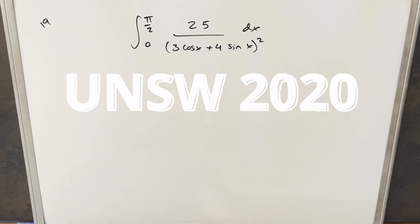Okay, we have here today another interesting integral from the UNSW integration B 2020 problem 19. We have the integral from 0 to pi over 2